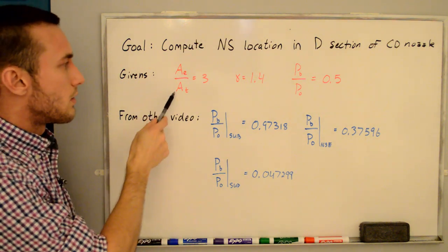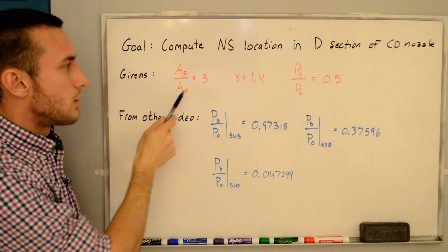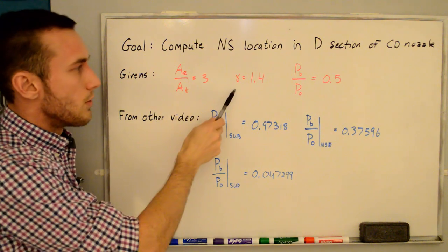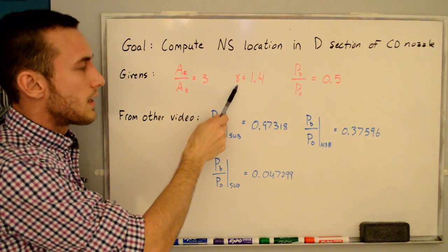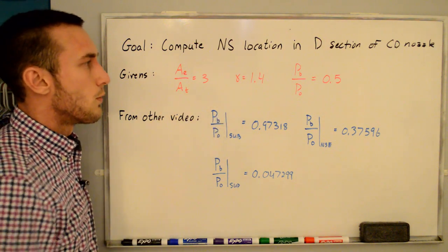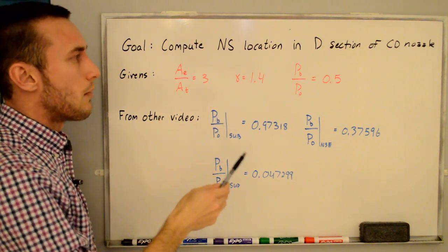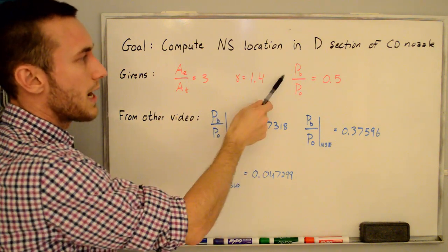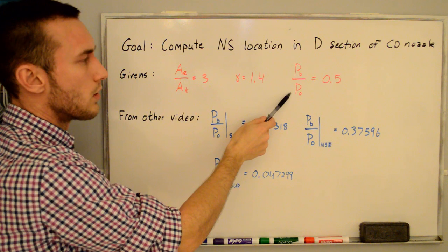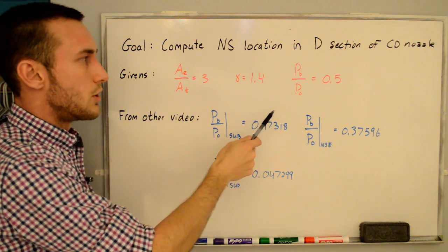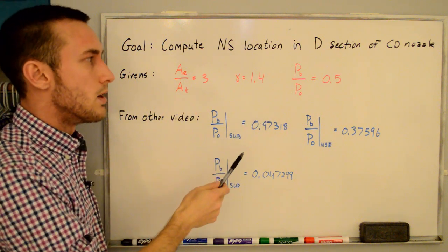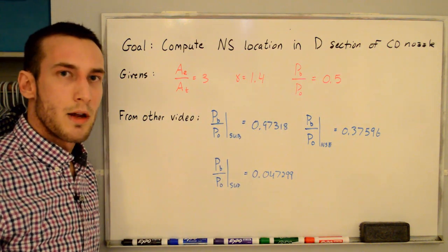The exit area to throat area ratio is equal to 3, the ratio of specific heats gamma is equal to 1.4, and for this problem we're setting the back pressure to reservoir pressure ratio PB over P-naught equal to 0.5.